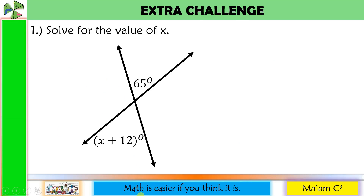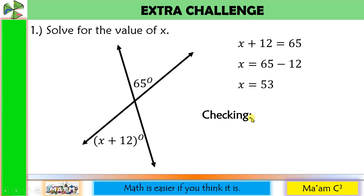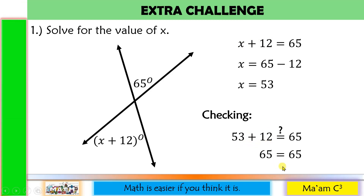Let us do an extra challenge. Number 1: Solve for the value of X. We will apply algebra. These two angles are vertical angles, so they are congruent — we equate them. X plus 12 equals 65. Moving 12 to the other side: X equals 65 minus 12, which is 53. Checking by substitution: 53 plus 12 is 65. They are equal. Therefore, X equals 53 is correct.